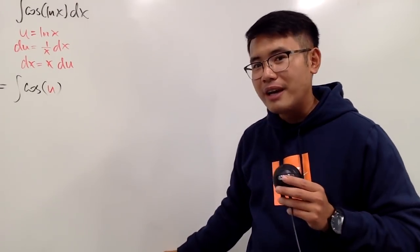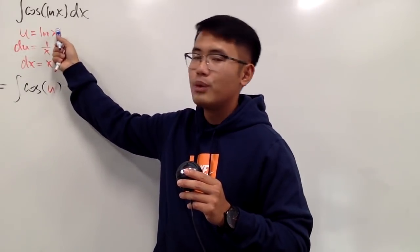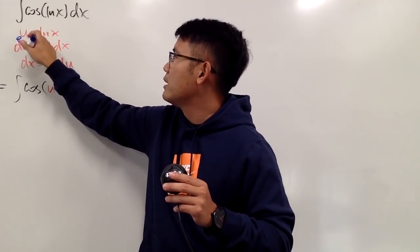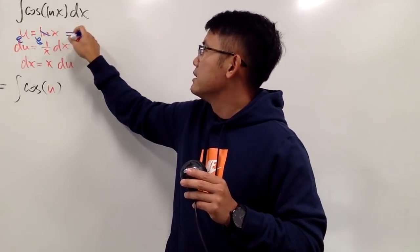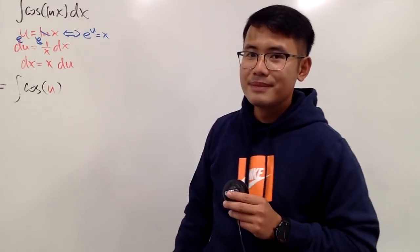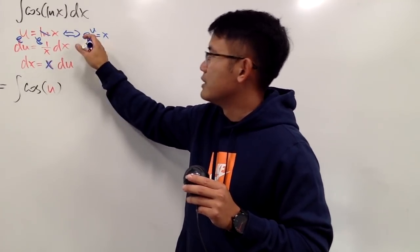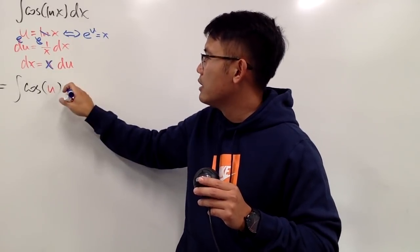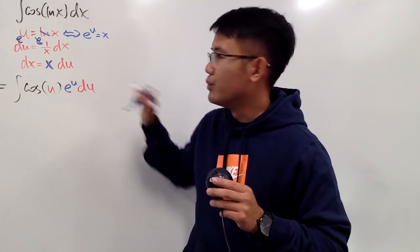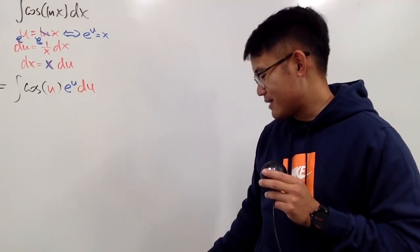That's not good, but it's an easy fix. Look back at u equals ln x, and raise e to both sides: e and ln cancel, giving us e to the u equals x. So for the x in the integral, I will replace it with e to the u. Now the integral is completely in the u world: the integral of cosine u times e to the u du.